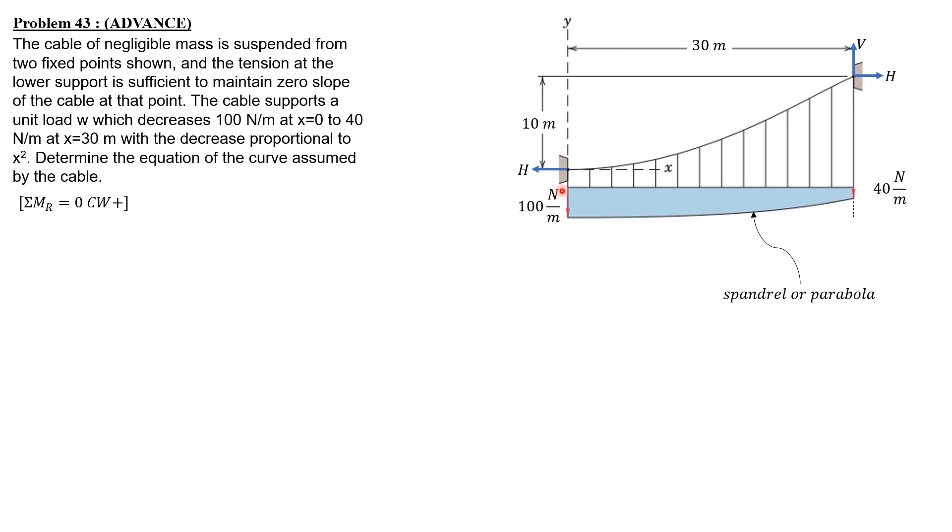H times 10 equals the rectangle, which is 100 times 30 times 15, minus the spandrel, which has area one third of 30 times 60 (this is 100 minus 40), and distance of centroid from the right end is 30 over 4. So H times 10 equals 100 times 30 times 15, minus one third of 30 times 60 times 30 over 4. Solving for H, H is 40,050 N.